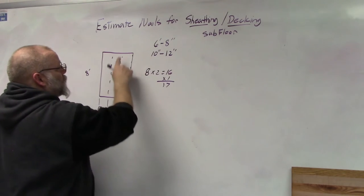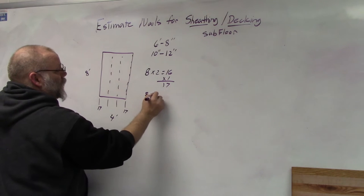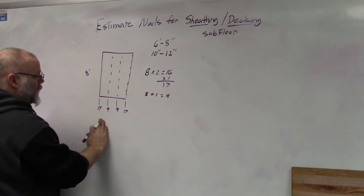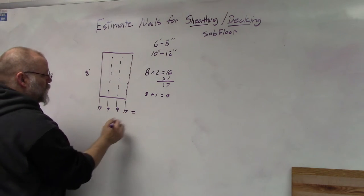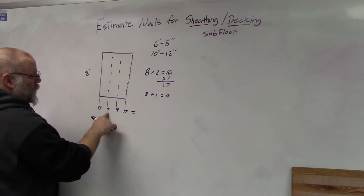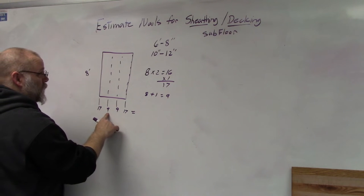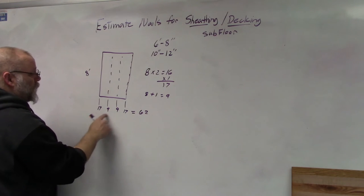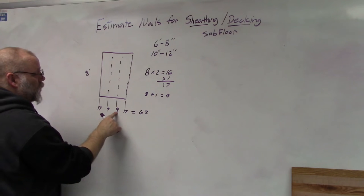On the interior, you've got eight feet, so that's eight plus one, so that will be nine. You'd have nine here and nine there. If you add all those together, you've got 17, 34, and 18 is 52, if my math is correct.